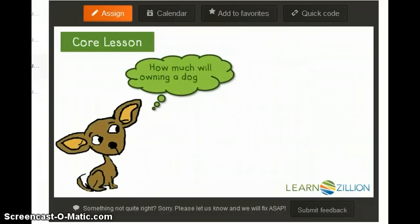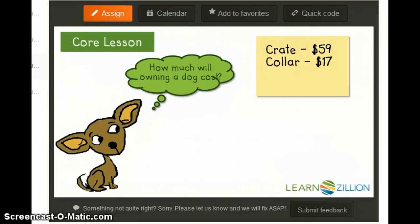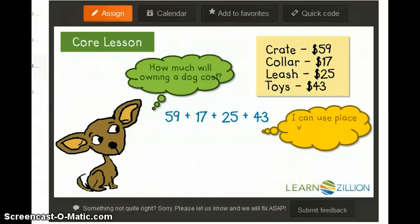Now let's think about how much it will cost to own a dog. The crate will cost $59, the collar $17, the leash $25, and the toys $43. To get the total cost, I will need to add 59 plus 17 plus 25 plus 43.